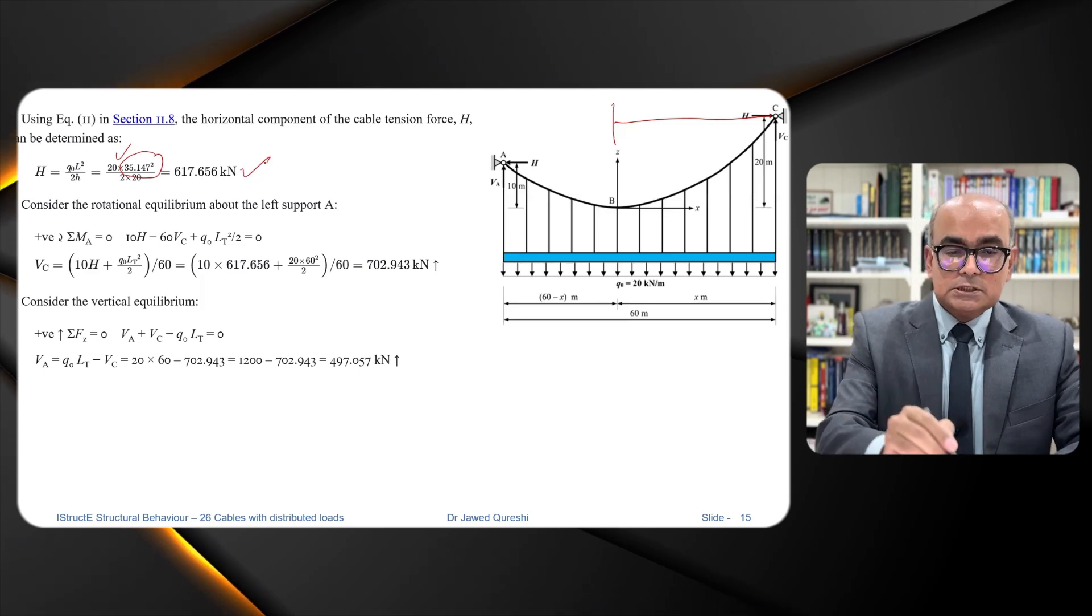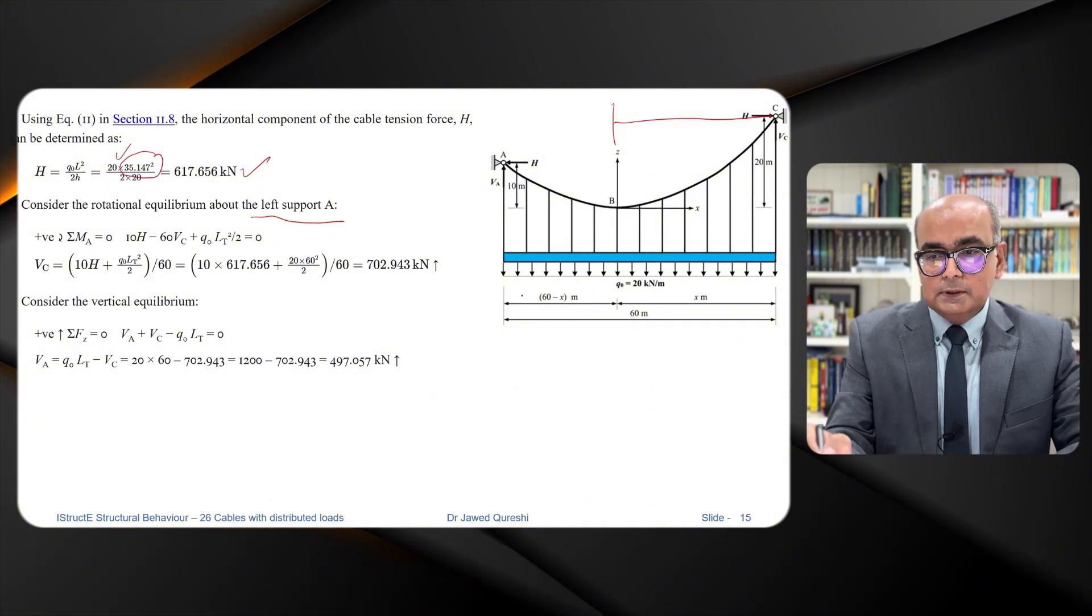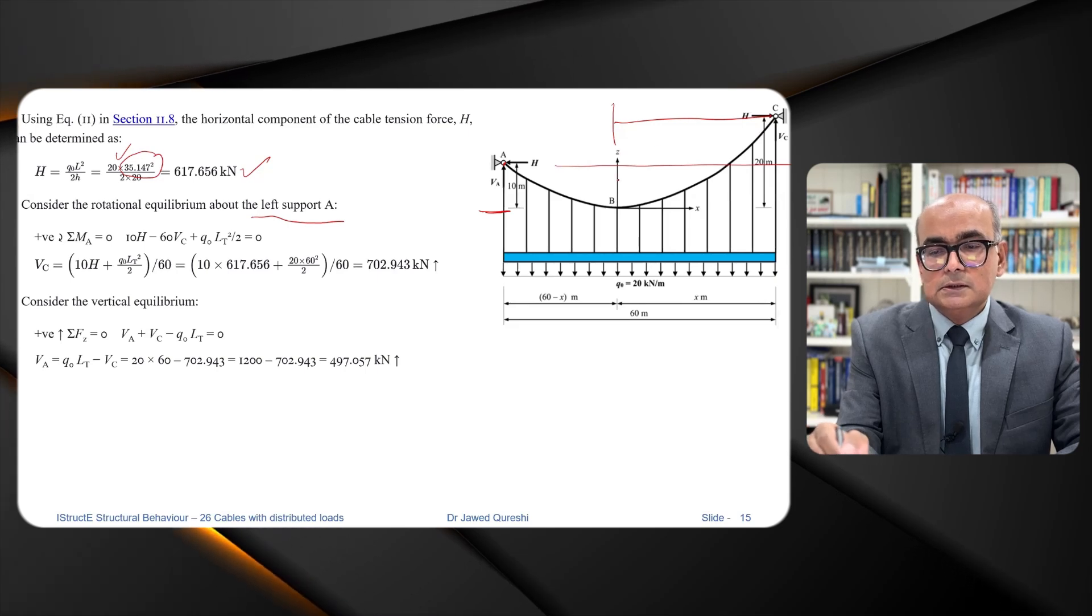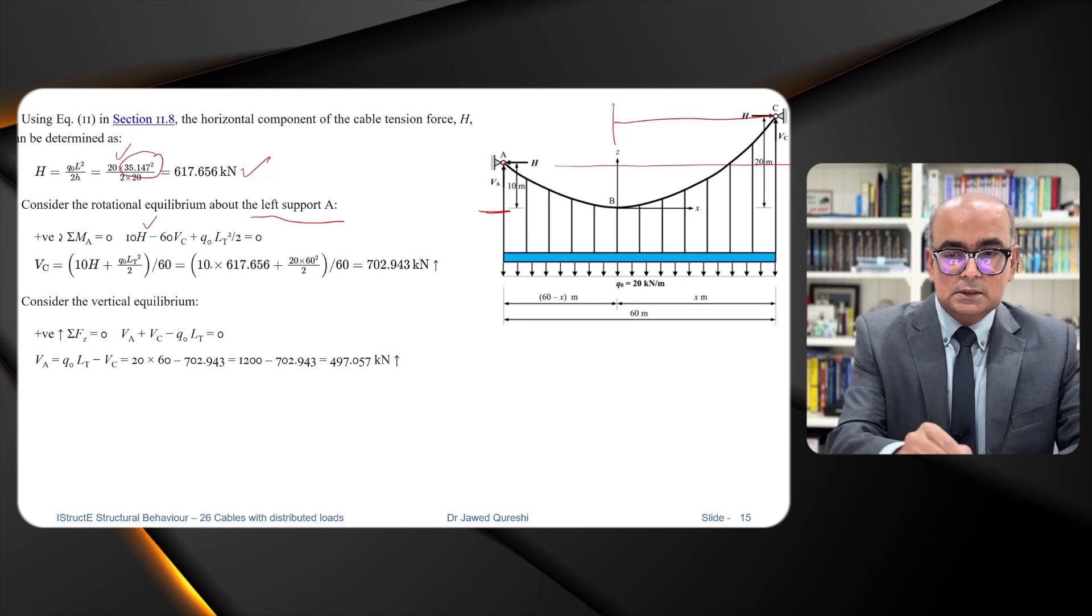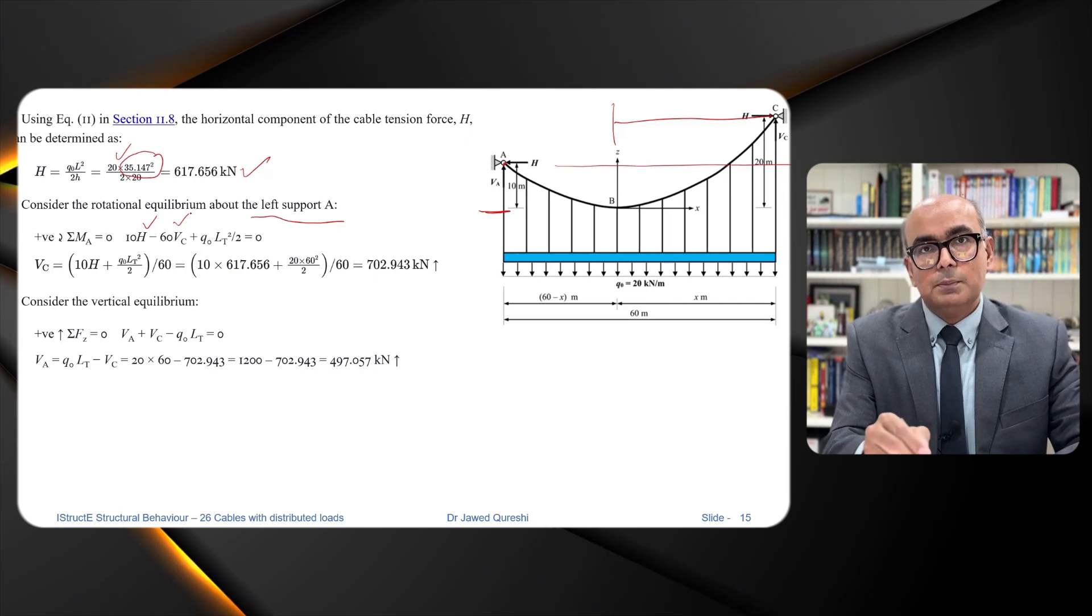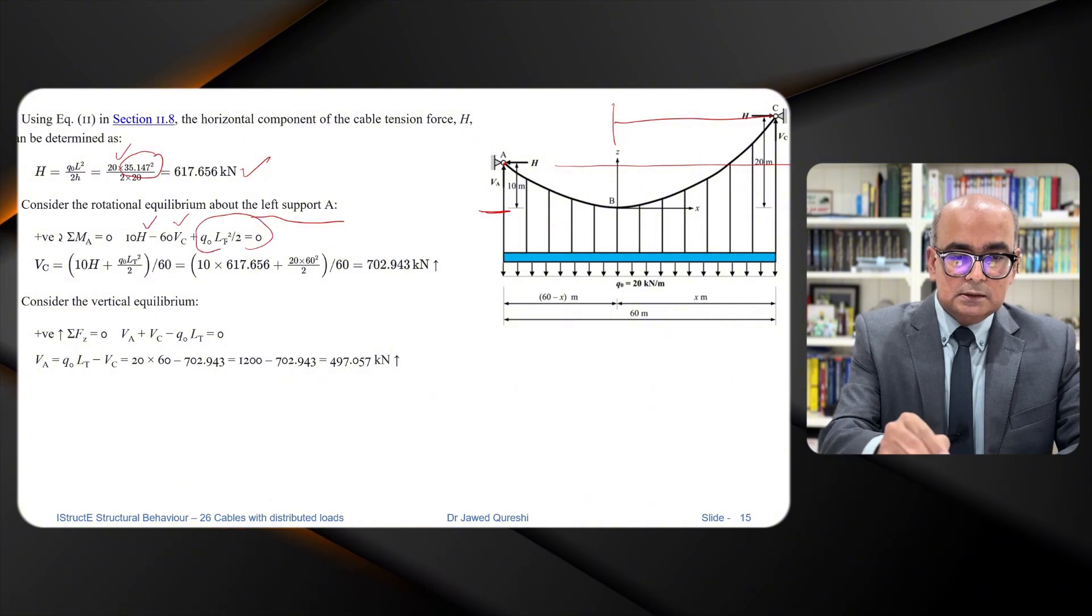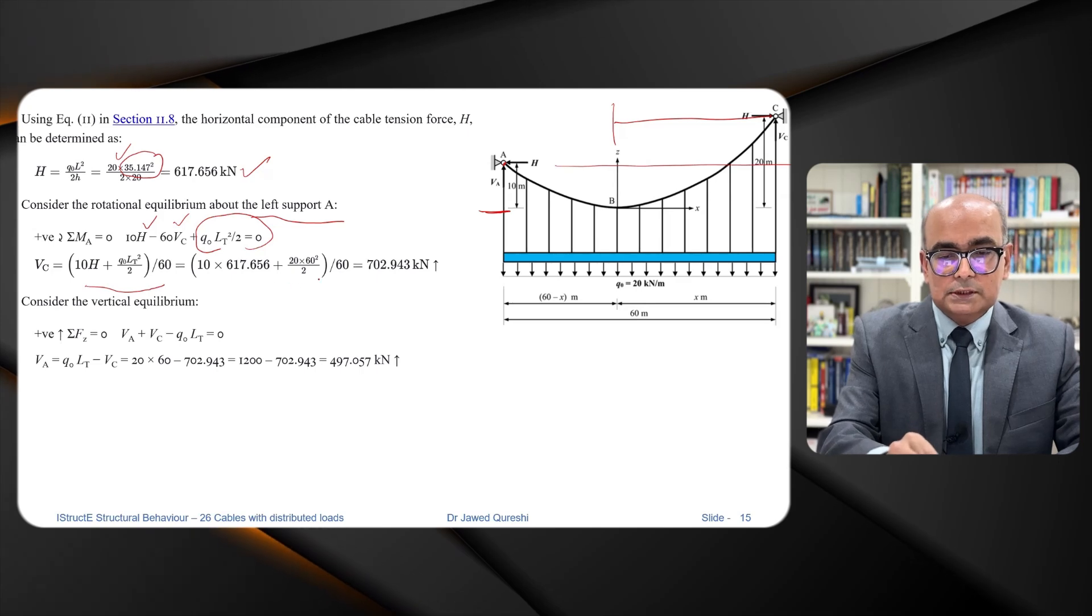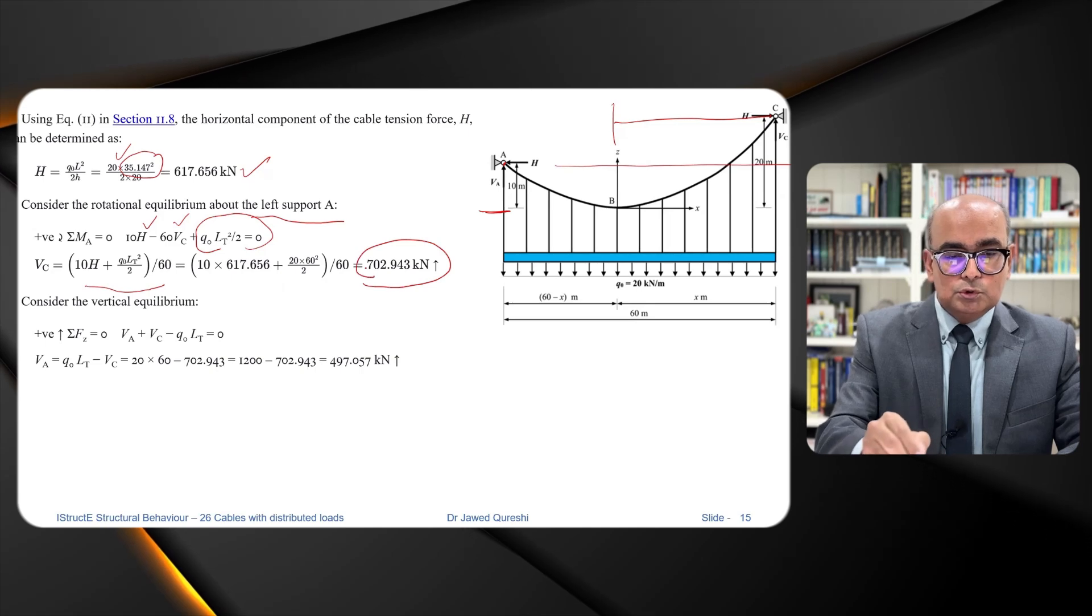Now consider the rotational equilibrium of the left support. Then we have 10 times H, distance between H and the center point. The vertical distance is 10. So 10 times H and 60 times VC is creating anti-clockwise moment which is the reaction and UDL is creating this loading. From here we can put values of all the variables and we get value of VC as 702.